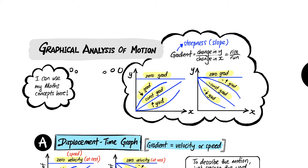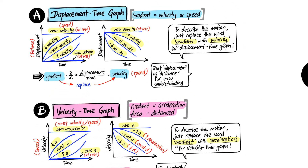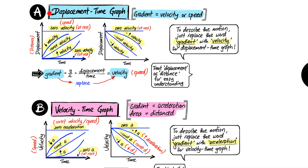In this video we're going to learn about graphical analysis of motion — basically how to describe the motion of a car or an object based on a graph. There are two types of graphs you're going to learn: namely the displacement-time graph, or you can treat it as a distance-time graph, and the other one will be the velocity-time graph or speed-time graph.